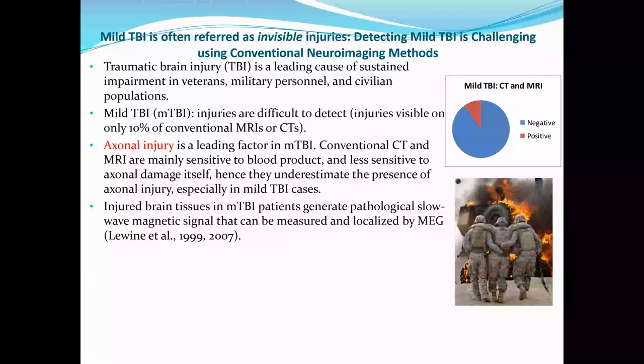In the past, people used MEG and detected one type of abnormal signal, which is a low-frequency slow wave — in the delta band at 1 to 4 Hz, sometimes extending to the theta band at 4 to 7 Hz — during resting state recording.